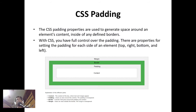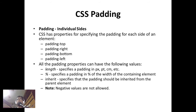After margins, we have CSS padding. The CSS padding properties are used to generate space around element content, inside of any defined borders. With CSS you have full control over the padding. CSS has properties for specifying the padding for each side of an element: padding-top, padding-right, padding-bottom, and padding-left.